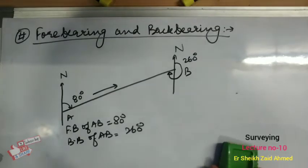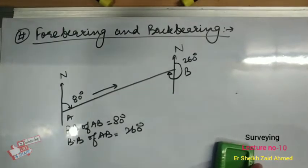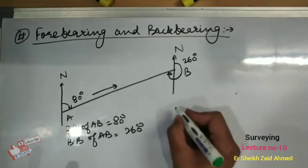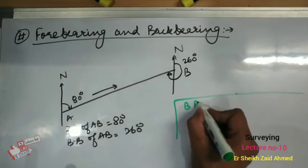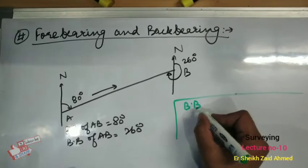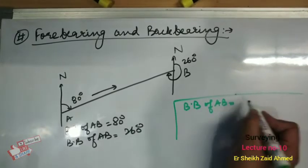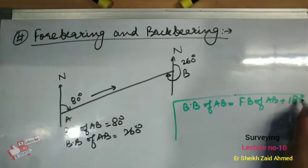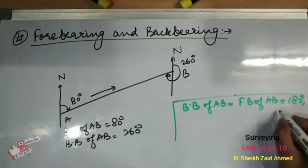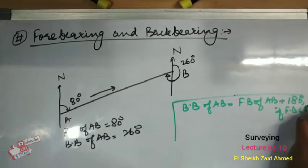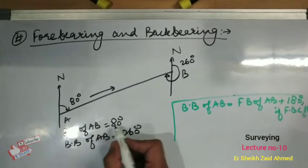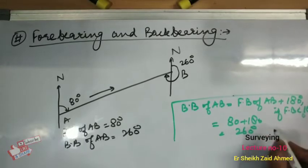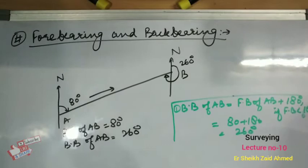Now we will move on to the determination of backbearing from forebearing. There are two formulas. Formula one: Backbearing of AB = Forebearing of AB + 180 degrees, when the forebearing is less than 180 degrees. In our case forebearing is 80 degrees, which is less than 180, so backbearing = 80 + 180 = 260 degrees. Formula two: if forebearing is greater than 180 degrees, then Backbearing = Forebearing − 180 degrees.